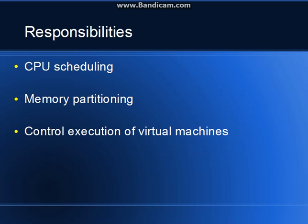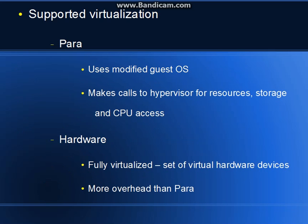Some of the responsibilities of Xen are CPU scheduling, memory partitioning, and the control and execution of these virtual machines. The supported types of virtualization are para-virtualization, which uses modified guest OS's, and these make calls to the hypervisor for resources, storage, and CPU access.